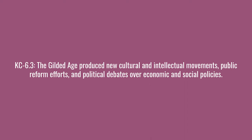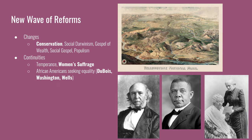The next key concepts delve into cultural movements. The Gilded Age produced new cultural and intellectual movements, public reform efforts, and political debates over economic and social policies. Brand new movements include the conservation movement — Yellowstone National Park is designated as the first national park in 1872 as a result of conservationist advocacy. Social Darwinism was adapted from Darwin's original observations on evolution and applied to business and people, used to support a lack of government regulation and to justify racial discrimination. The Gospel of Wealth, proposed by Andrew Carnegie, advocated for wealthy individuals to engage in philanthropy. Finally, Populism was a movement that asked for greater government intervention to help lower economic classes, especially farmers.